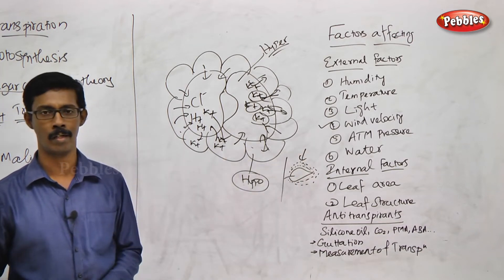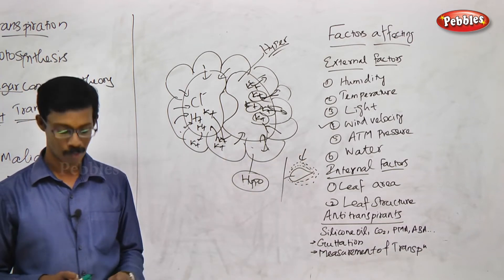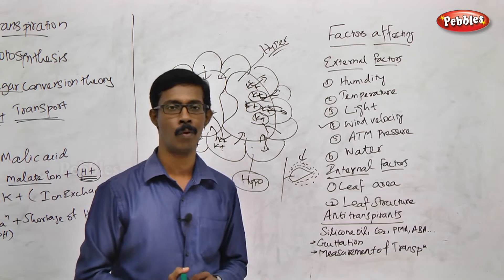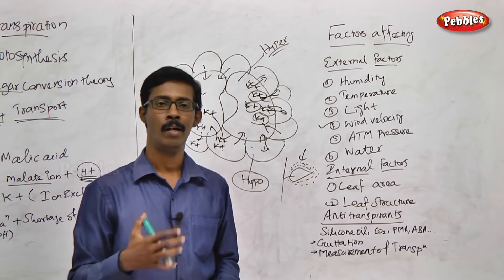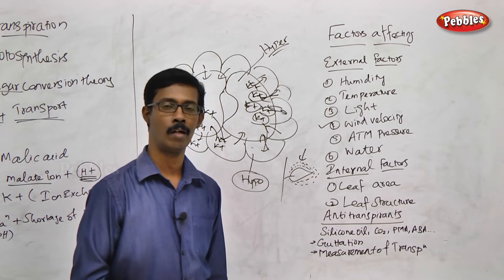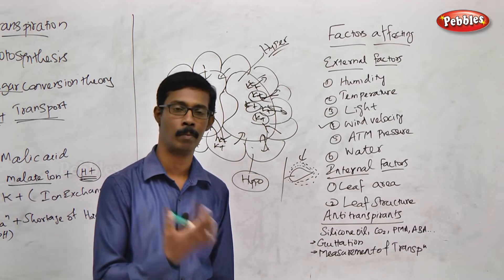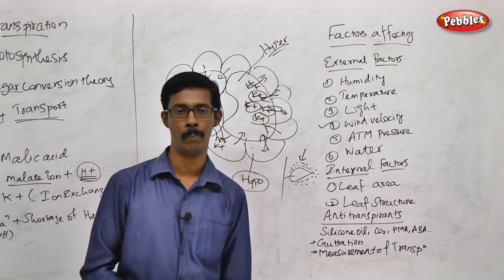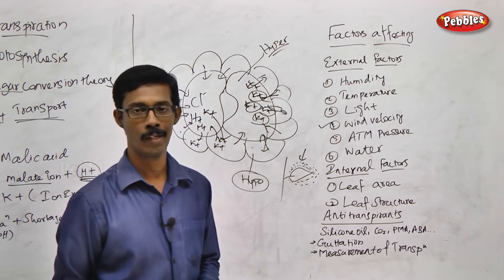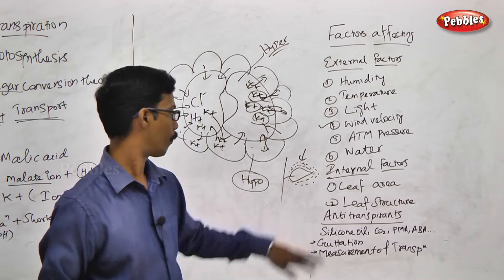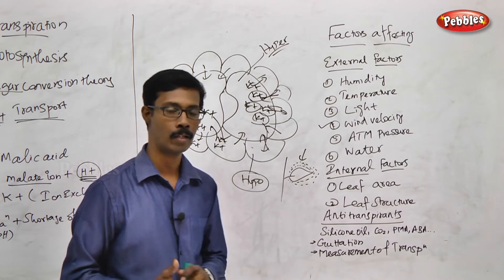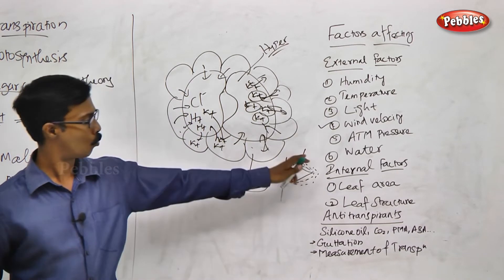Water content and availability is another external factor. When water is too much available, transpiration increases. When water in the soil is very low, water supply is reduced and transpiration becomes less efficient. These are the external factors which affect transpiration.